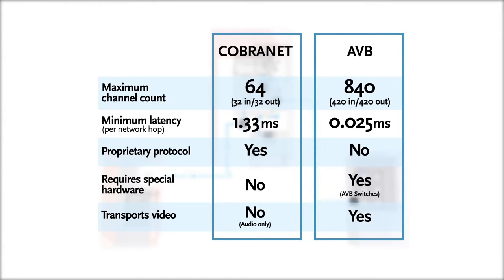While CobraNet and AVB are both excellent for transmitting digital audio over a network, every installation has unique requirements and you may want to consider some of these differentiating factors for your next installation.